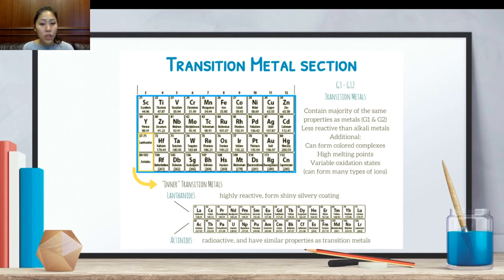Your actinides are actually radioactive. So this period is like this group are all radioactive. And they have similar properties as transition metals. The first four elements that are on this actinide, so the first four elements that we see here are naturally occurring. And most of these that follow behind are all made in a lab.